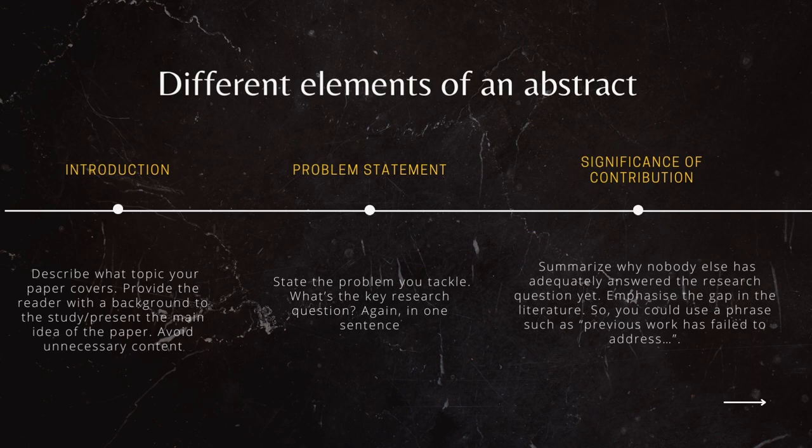You're then going to move on to what we call a problem statement. Why are we doing the research? It is identifying a problem within the particular specialization you've opted for, and saying this is the reason why something needs to change or needs to be done. State the problem you're tackling, what's the key research question. Again, try to do this in a very simple one or two sentences. Tell us what the goal of your research is.